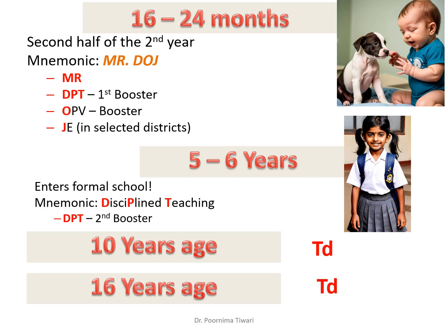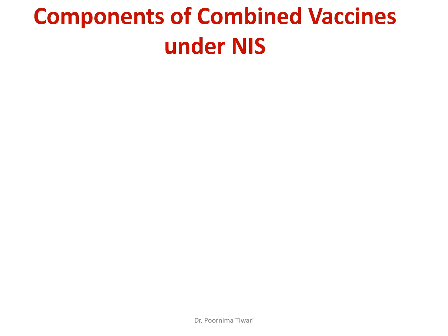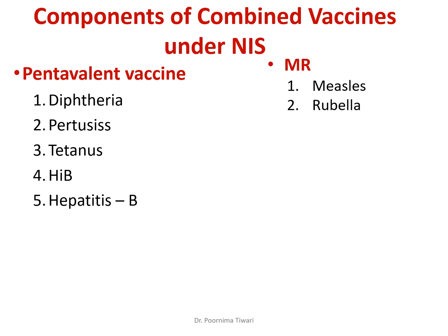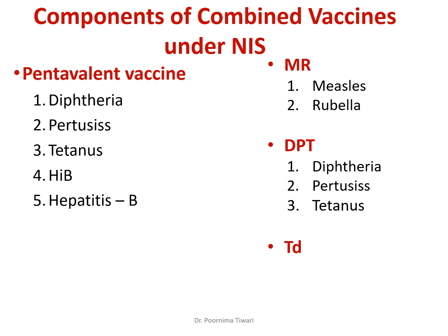A brief discussion on combined vaccines: Pentavalent vaccine has five components — Diphtheria, Pertussis, Tetanus, Haemophilus influenzae type B, and Hepatitis B. MR contains Measles and Rubella. DPT contains Diphtheria, Pertussis, and Tetanus. TD contains Tetanus and Diphtheria. More details are available in other lectures.